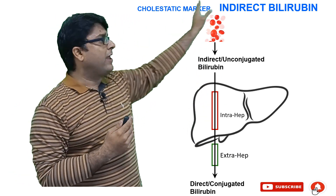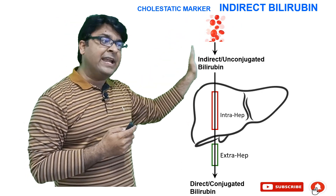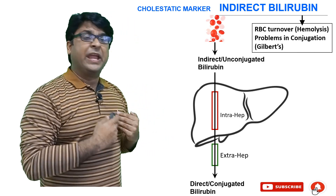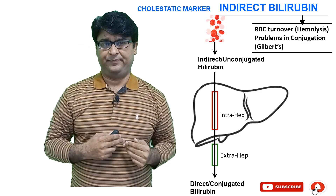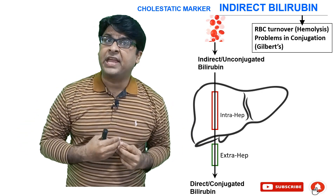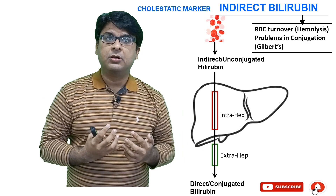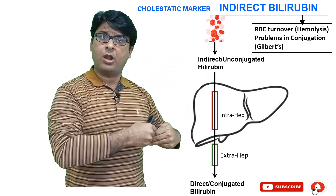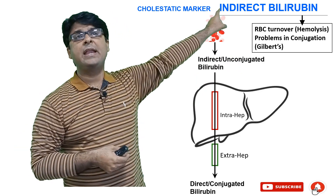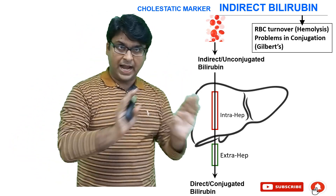Now, indirect bilirubin as a cholestatic marker. RBCs produce indirect bilirubin, which enters the liver, gets conjugated, and comes out as direct bilirubin. Whenever there is increased RBC turnover — think hemolytic anemias — red blood cells are destroyed in large numbers. When they are destroyed in large quantities, unconjugated bilirubin is produced in large amounts. So whenever there is a problem with red blood cell turnover and hemolysis increases, indirect bilirubin increases — more hemolysis, more indirect bilirubin.